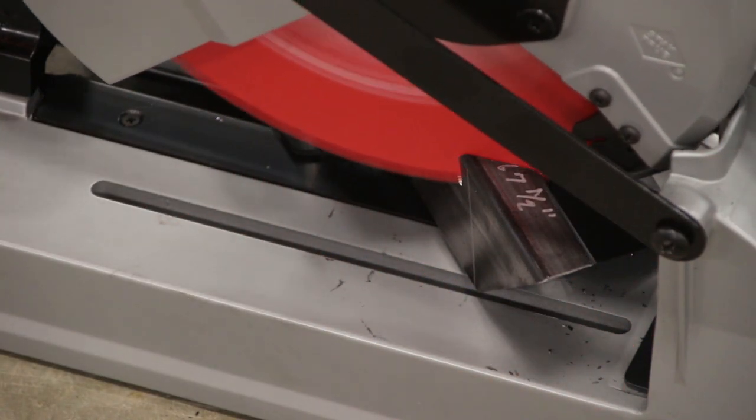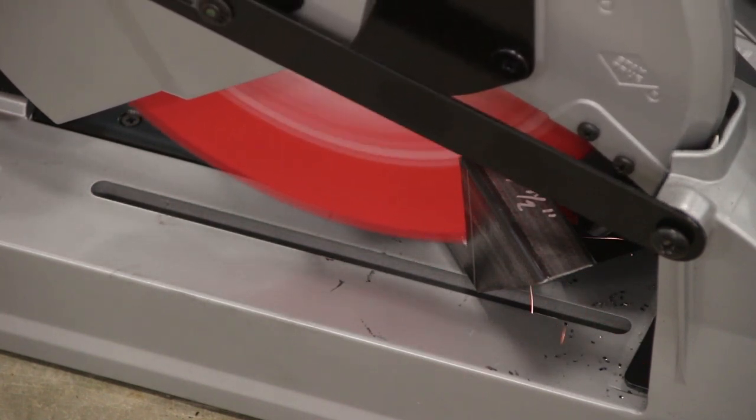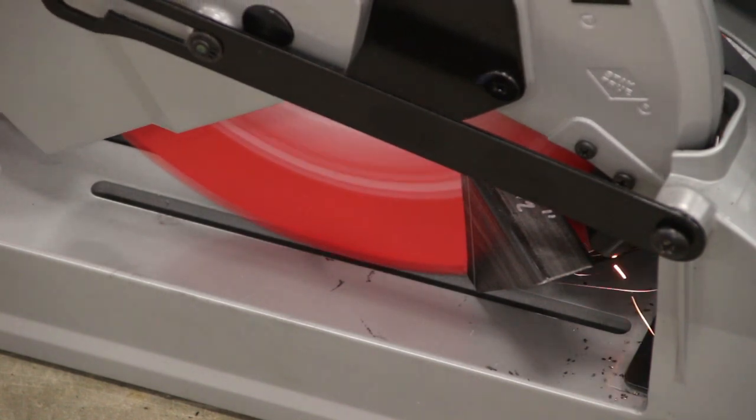This clip is in real time. The combination of the high quality blade and the saw really makes it a treat cutting this 1 inch by 3 inch steel tubing that has a 1/8th inch thick wall.